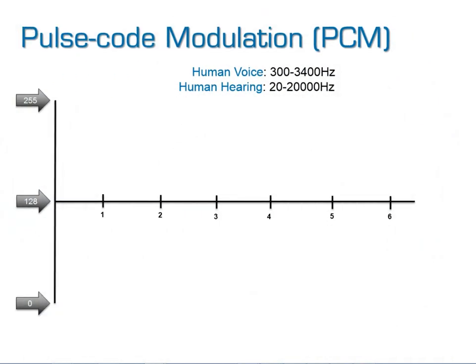How pulse-code modulation works is simple. The human voice is capable of speaking from 300 to 3400 Hz and capable of hearing from 20 to 20,000 Hz. For best fidelity, we measure things at 8000 Hz — meaning 8000 samples per second, measuring how many times within one second we capture the signal.